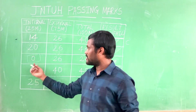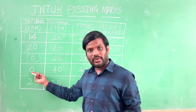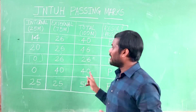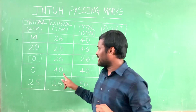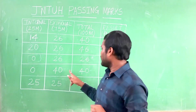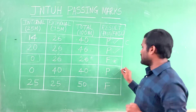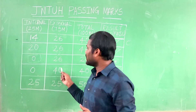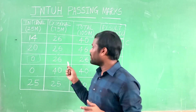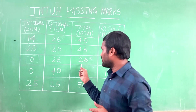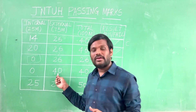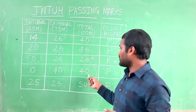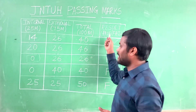In another case, a student got 0 in the internal. But he got 40 in the external. In order to satisfy the sum, if a student gets 0 in internal, he should satisfy 40 marks in the external exam. So here we can say the result is pass. As I told you, you got 0 in internal; when you sum up, the total should be 40 or more. So the result is pass.